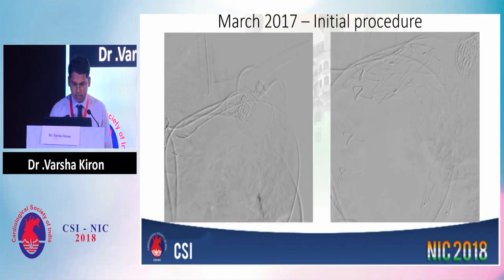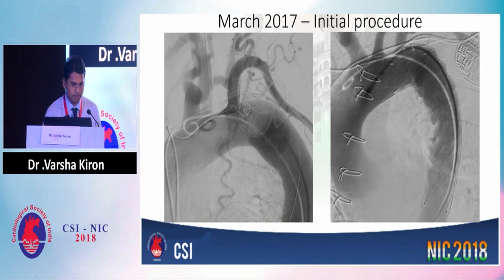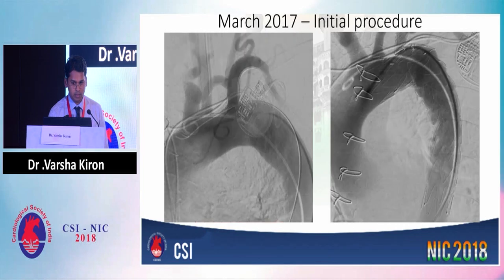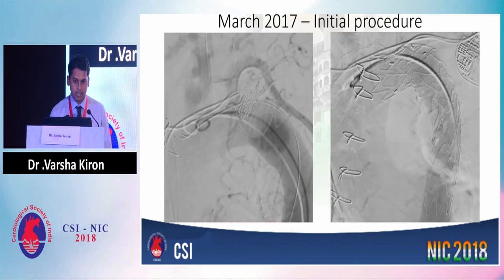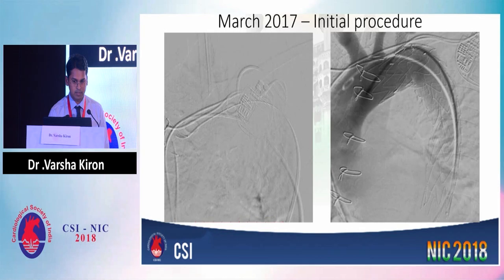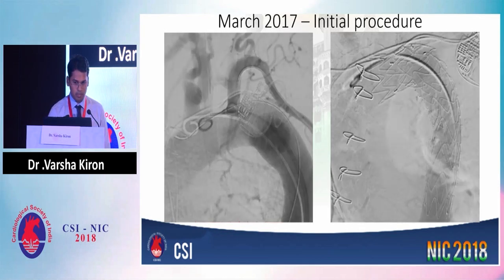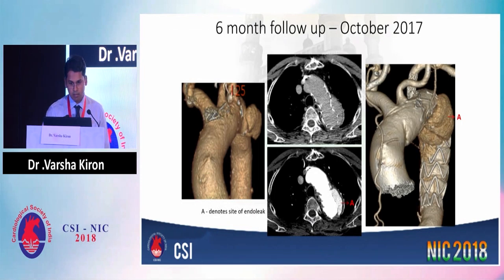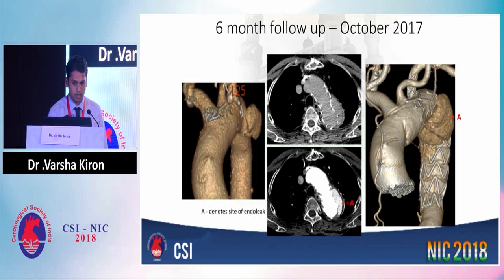This was our initial procedure done in March 2017. The panel on the left shows the pre-procedure angio and the panel on the right is after the fenestrated EVAR. There is one custom-made fenestration to the left subclavian artery which is flowing well and the dissection was completely sealed. When he had come back for a six-month follow-up, we had seen persistent filling of the endo sac, in the same location as the initial aneurysm sac. It was presumed to be a type 2 endoleak.